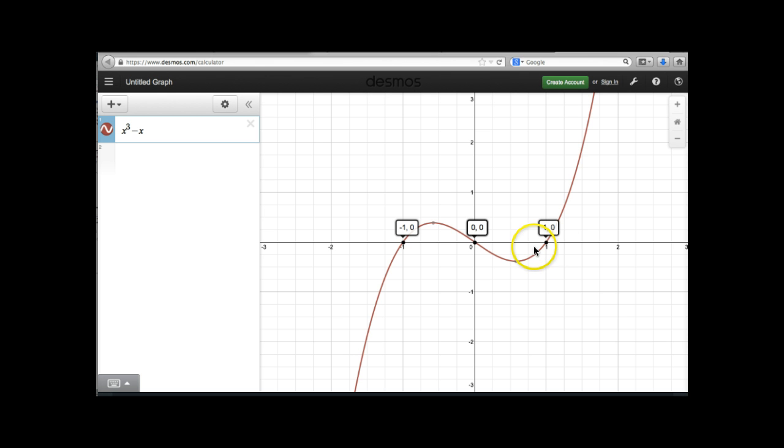You can also see that when I clicked on my line, it gave me points for my, it's called a local maximum, because sometimes you can have more than one maximum. So we just call it a local maximum. And then for my local minimum. So I'm going to go ahead and click on those, and that puts those points on my graph.